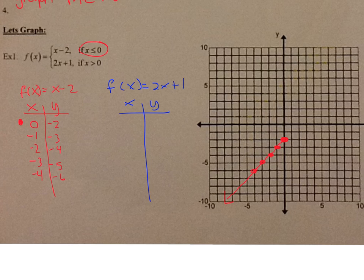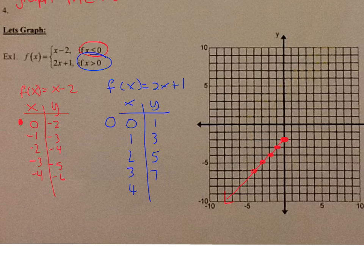Now let's go to the other part of the function. Plug into your calculator f(x) equals 2x plus 1. My x values have to be greater than 0. At x equals 0, I still plot the point but it's going to be an open circle — put an open circle next to it. Then x equals 1, 2, 3, 4. The y values will be 1, 3, 5, 7, 9. So at (0, 1) I'll have an open circle, then (1, 3), (2, 5), (3, 7), and (4, 9). So it'll look like that.